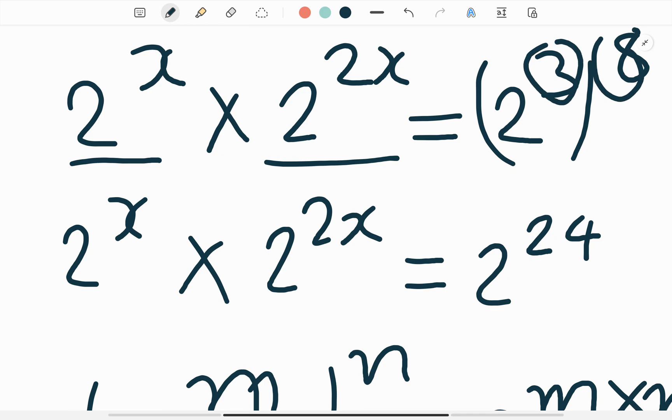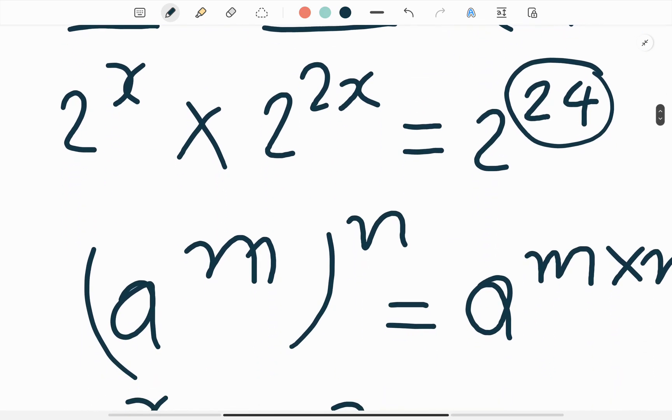We multiply our powers because when a to the power m whole power n, then we write as a to the power m multiply n.